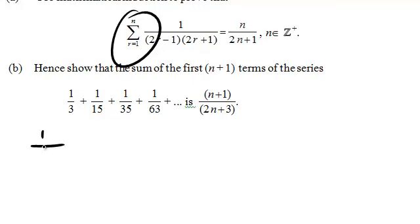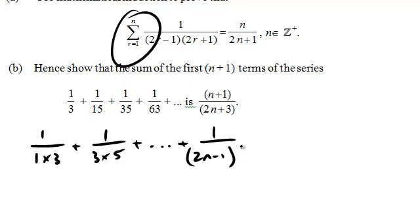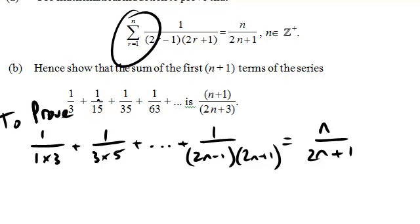So let's just put in r equals 1. And we get 1 over 2. That is 1 times 3. Plus 3 times 5. Plus dot dot dot plus, and then let's put in r equals n. 2 to the n minus 1 times 2 to the n plus 1. And that we are trying to prove it is equal to this.